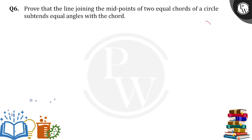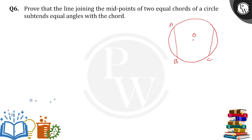Let's see here. There is a circle with center O. Now there are two chords. The two chords I am going to take are AB as one chord and CD as another chord. Now, OC is the radius of the circle.